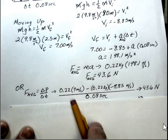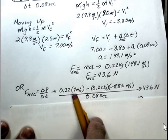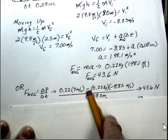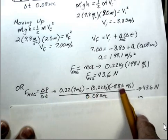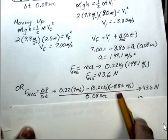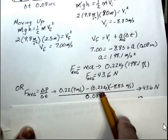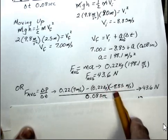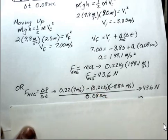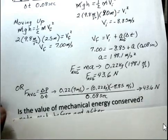And we have 0.22 times 7 meters per second. That's our final momentum. There's always a minus when we use a delta, so minus 0.22 times the velocity at the start of the collision was minus 8.85. The initial momentum is a negative number. But we're subtracting, so these two negative signs will cancel each other's effect. Divide by 0.08, we get the same value, 43.6 newtons.